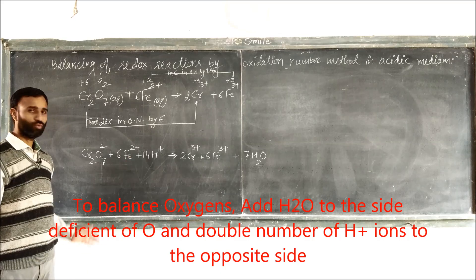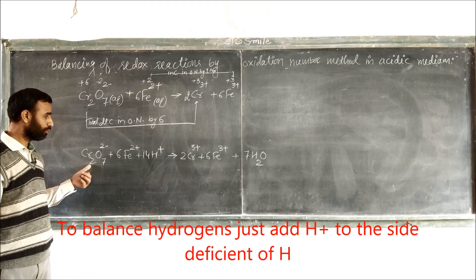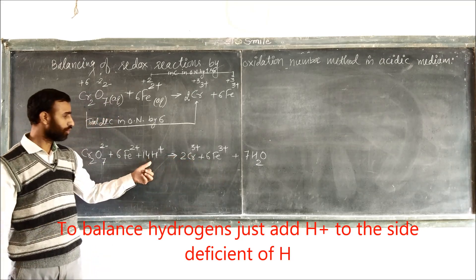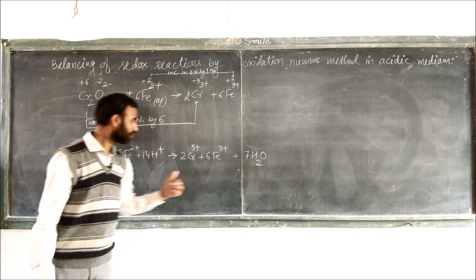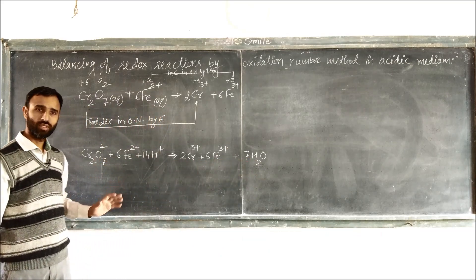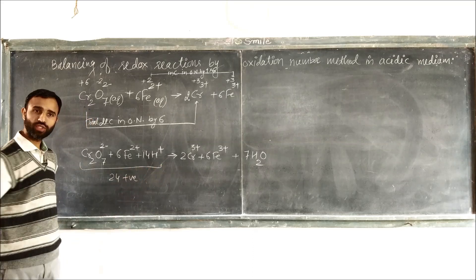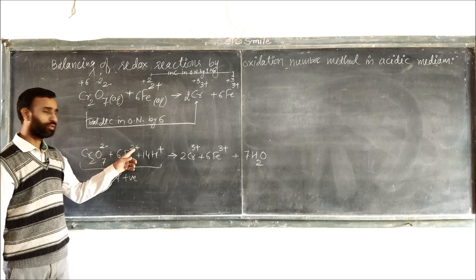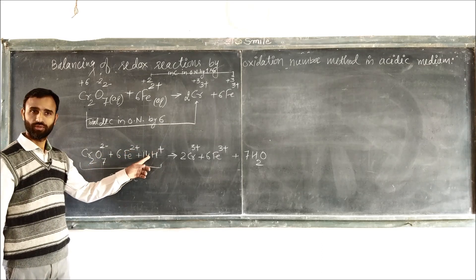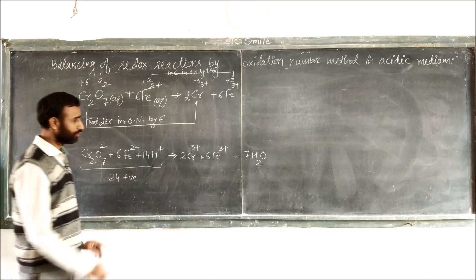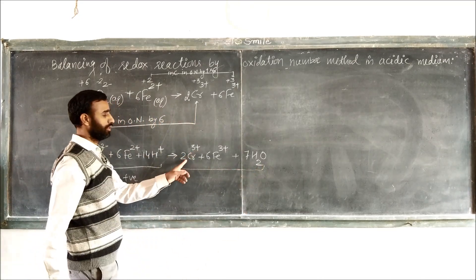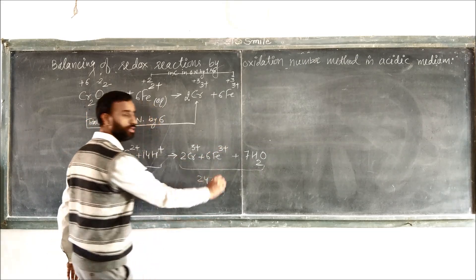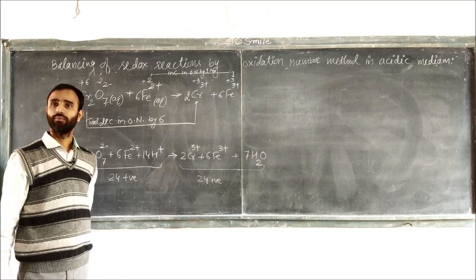Now to verify: we have 2 Chromium on both sides, 6 Iron on both sides, 14 Hydrogen on both sides, and 7 Oxygen on both sides. For charge: the left side gives 24 positive, and the right side also gives 24 positive. The equation is balanced.